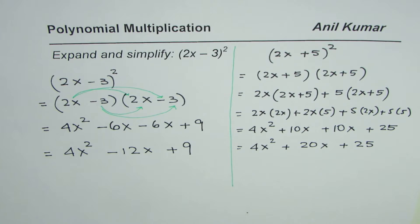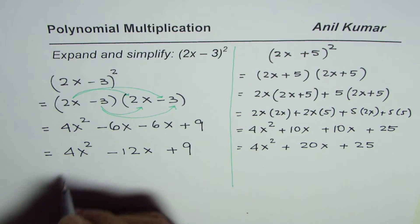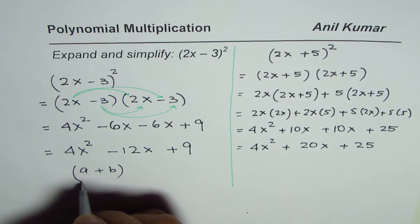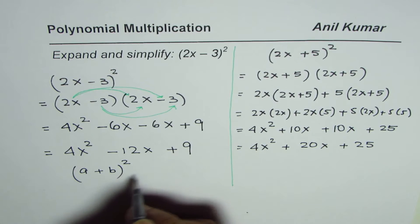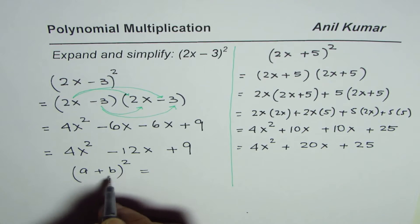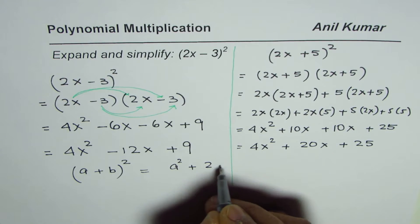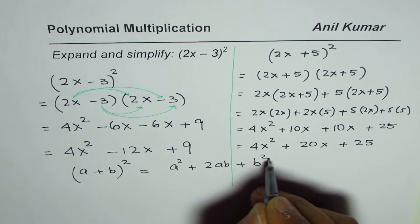If you do like this, always you get this kind of an answer. In general, what you can do is, you can do what is (a + b)² equals to. So that is an exercise for you. And if you do (a + b)², you'll get a² + 2ab + b².